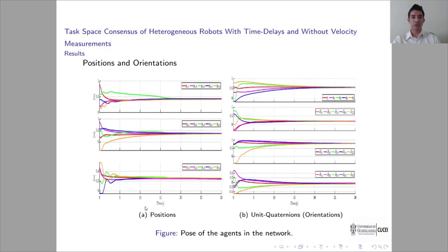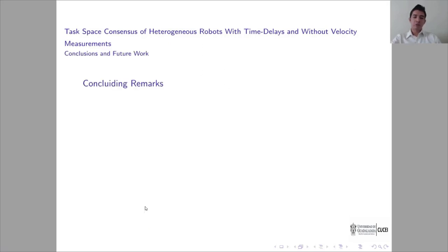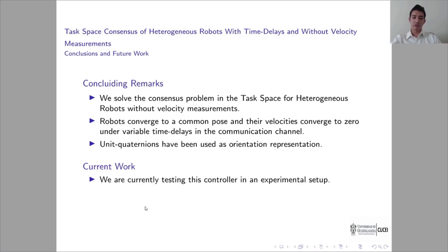For the case of the unit quaternions used to represent the robot's orientation, shown in figure B, we can observe that, around second 25, all unit quaternions converge to a common value. The linear and angular velocities behavior is shown in these figures, and we can observe that all of them converge to zero as we expected. As conclusion, we can remark the following. We have formally solved a task consensus problem for heterogeneous robots without velocity measurements. The proposed controller guarantees convergence to a common pose and velocities to zero with variable time delays in the communication channel. And the unit quaternions are used to represent the robot's orientation. It is a singularity-free orientation representation. We are currently testing our controller in a real heterogeneous robot network, and as future work, we will solve this consensus problem for the leader-follower case.